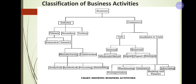Manufacturing industry is further classified into four types: first is analytical industry, second is synthetic industry, third is processing industry, and fourth is assembling industry. There is no further classification in construction industry. This completes the industry part.